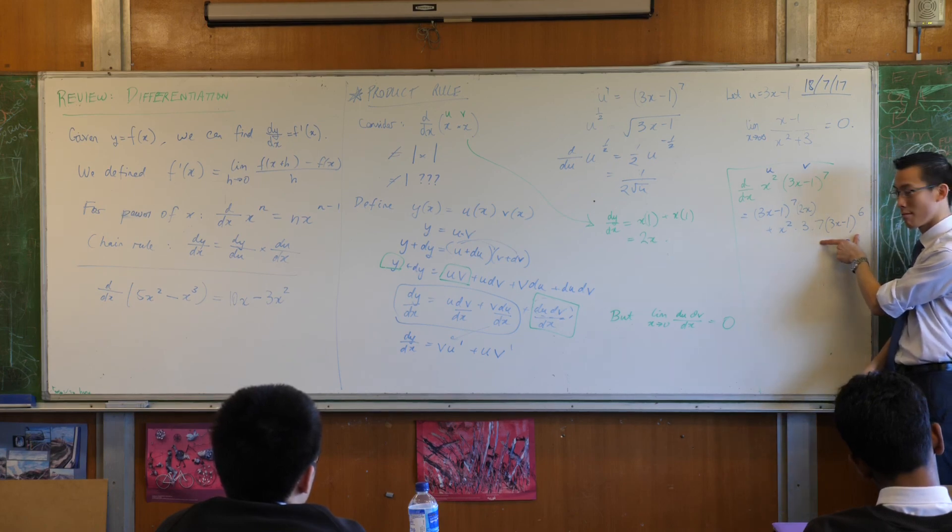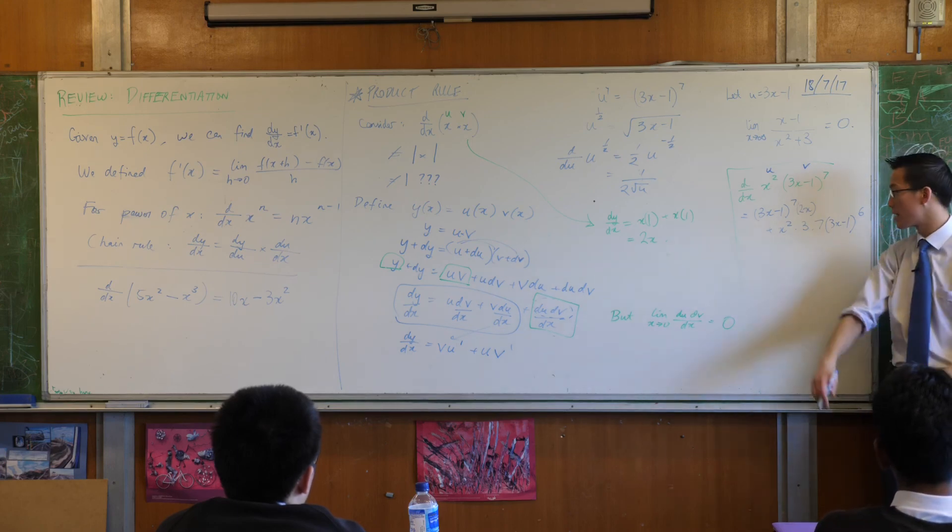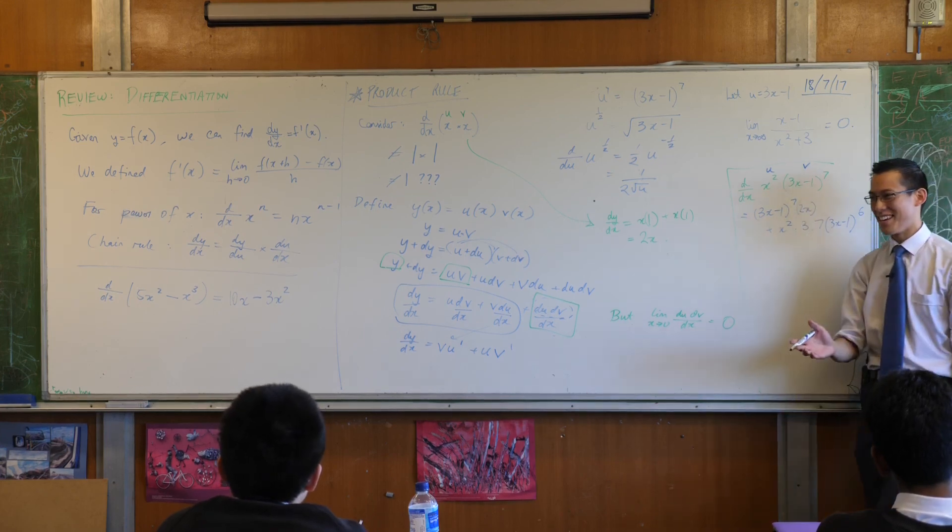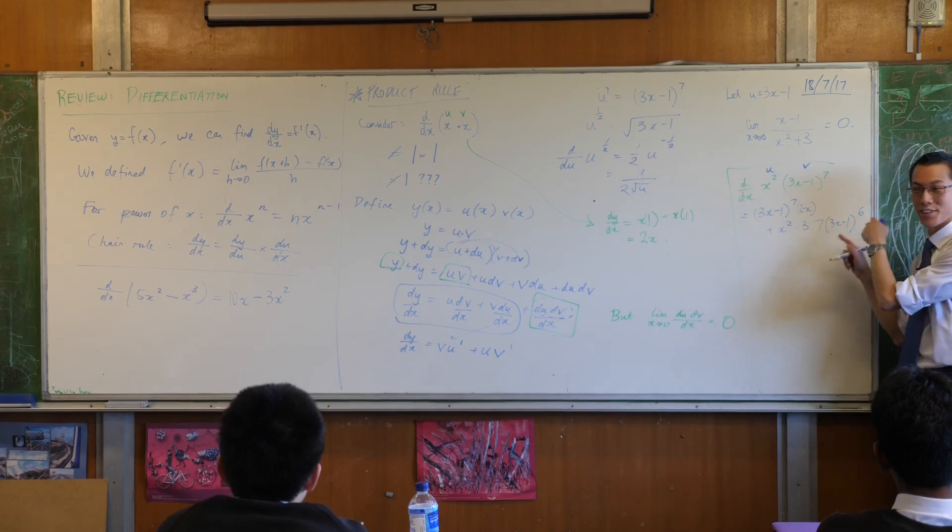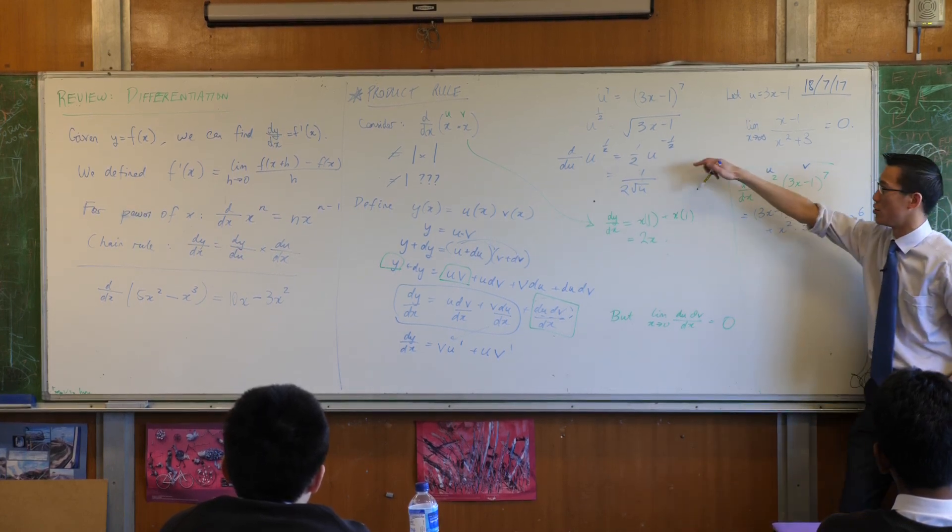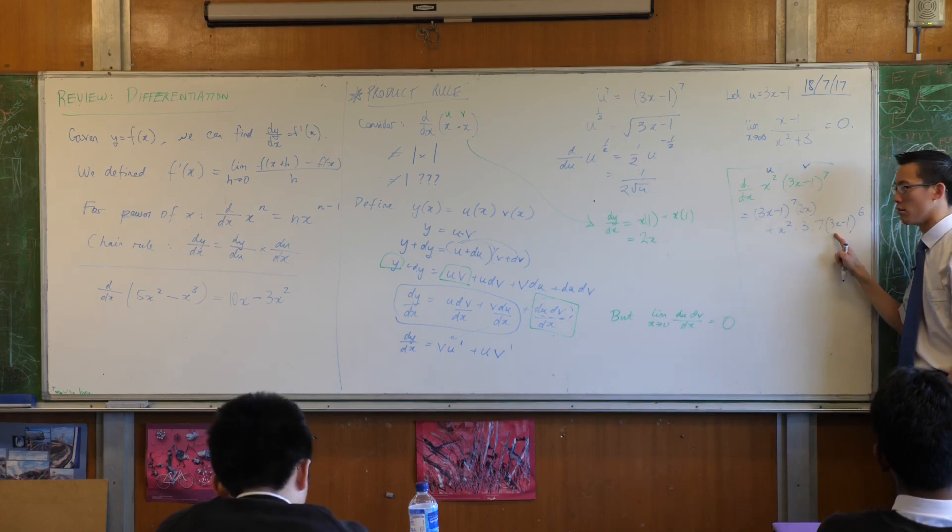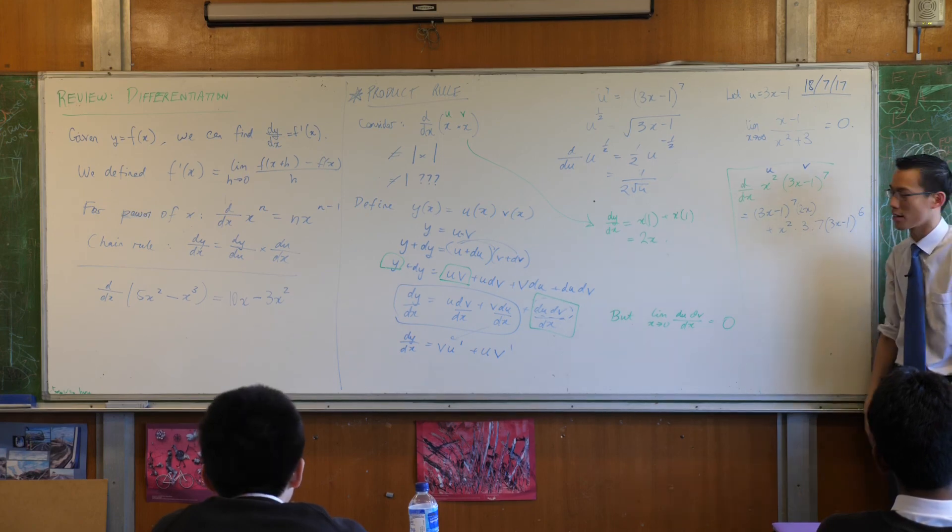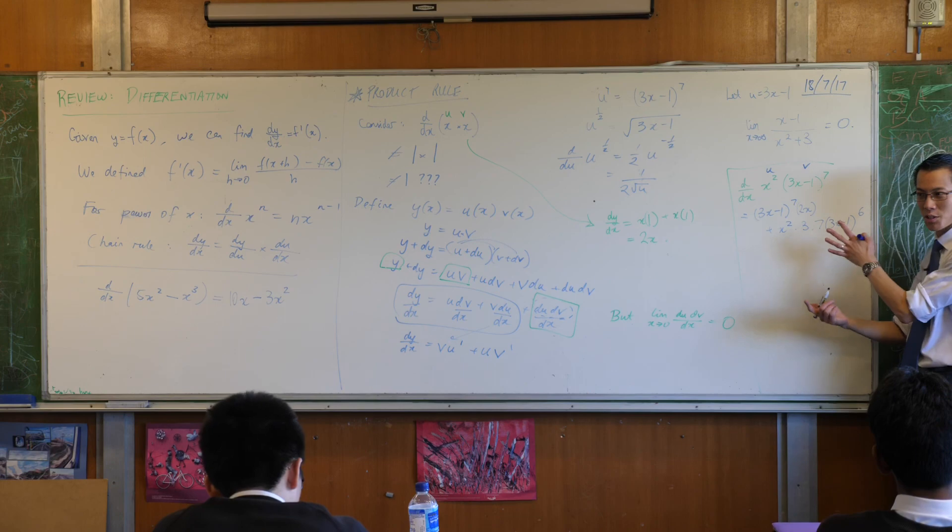You've already called x squared u. And then you used u's to have 3x minus 1. Yeah, too many u's. This is where I would say, if this is your brain getting confused with too many different levels of substitution, then you'd have to introduce more letters and you'd have to say, well, if this is u and this is v, I can't call this u as well. I'd have to call it w or z or something like that. But I think this is a sufficiently simple example that I can get away with not doing that.